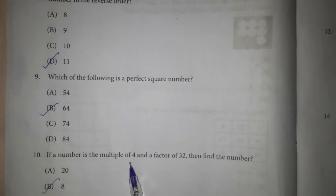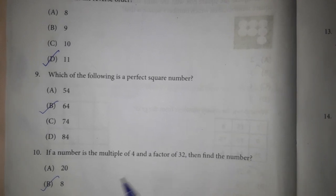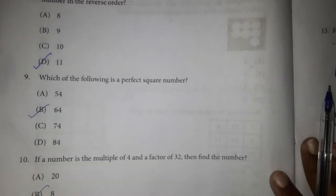4 is in the multiples of 4 table, 8 is the number. Factor of 32, 32 is the factors of 32, 8 is in the 32 table, so that's why we choose option B.